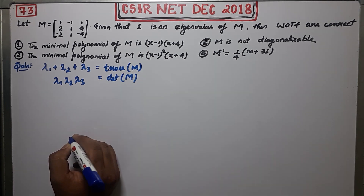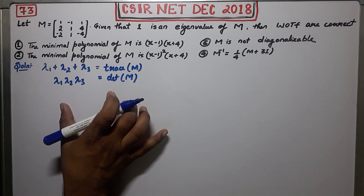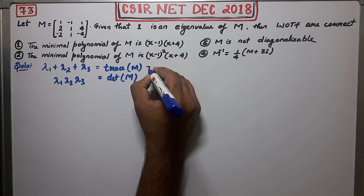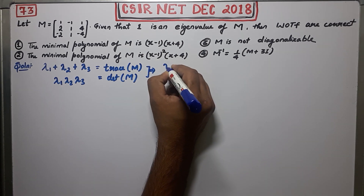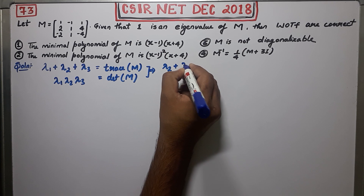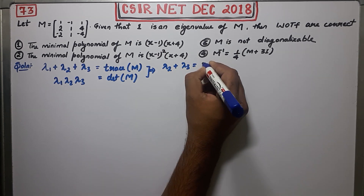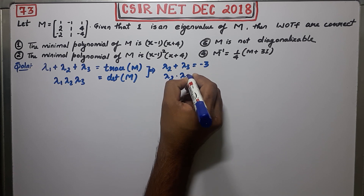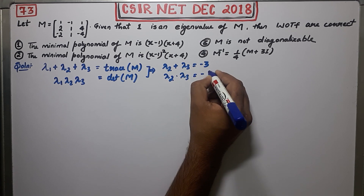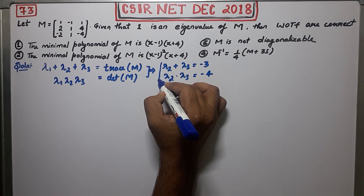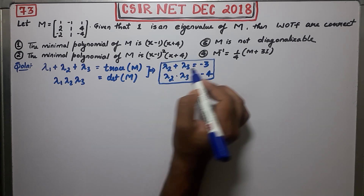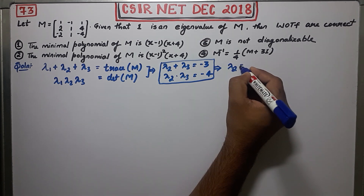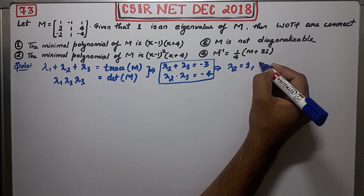Another thing you know is that lambda 1 times lambda 2 times lambda 3 equals the determinant of the matrix. Since 1 is an eigenvalue, these two facts imply that lambda 2 plus lambda 3 equals minus 3, and lambda 2 times lambda 3 equals minus 4. Solving this system gives lambda 2 equals 1 and lambda 3 equals minus 4.